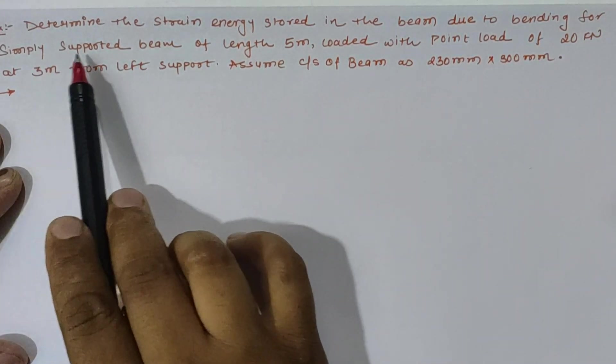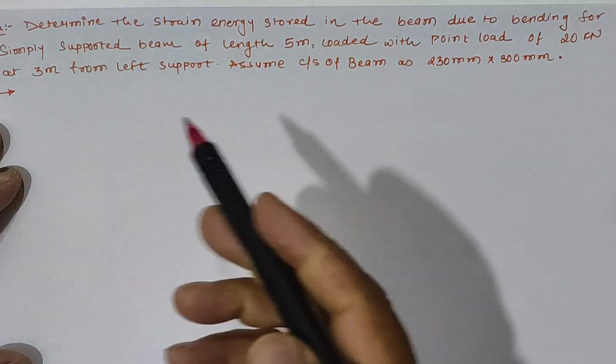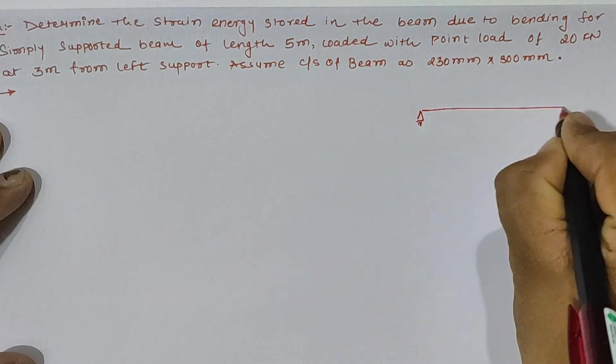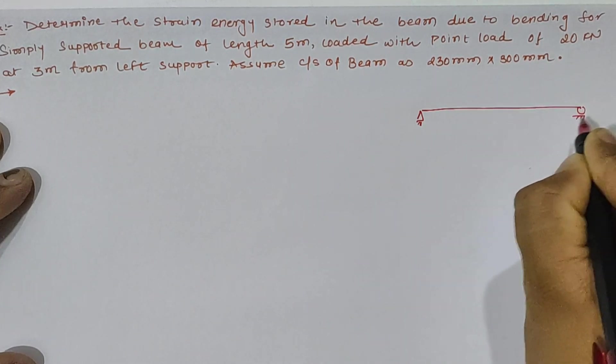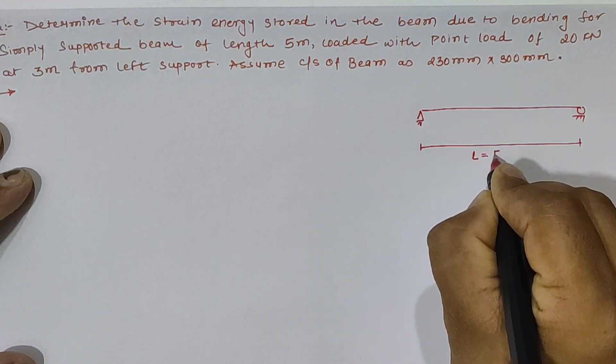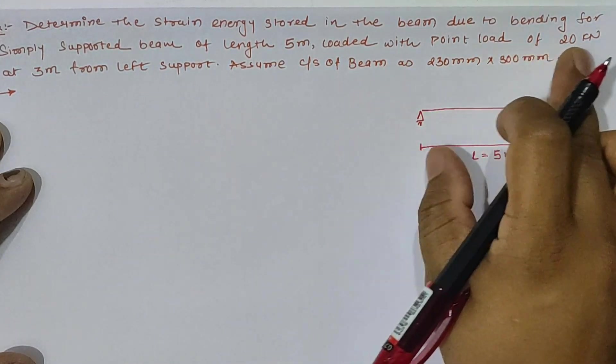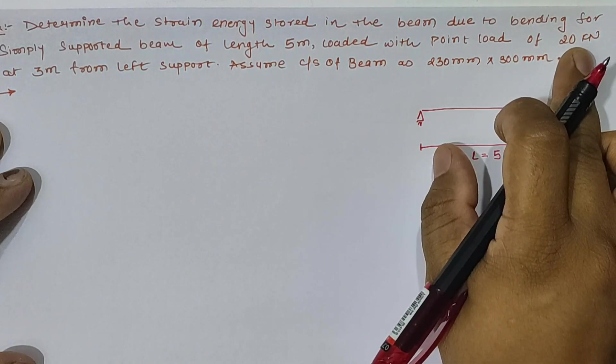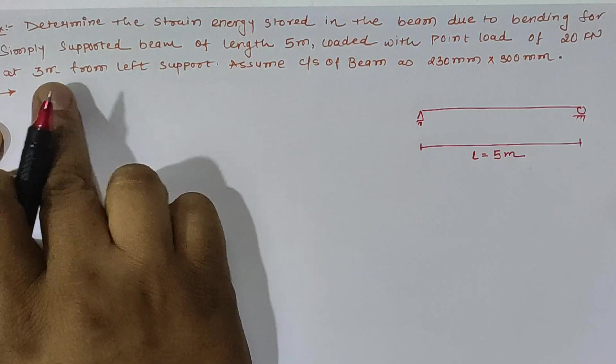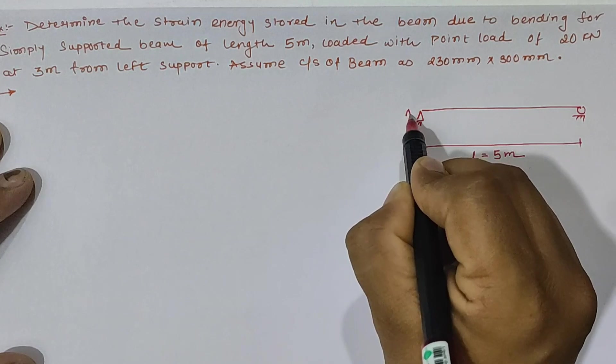We have given the simply supported beam of length 5 meters. It means we have given the simply supported span having overall length as 5 meter loaded with point load of 20 kN. It means we have given the point load as 20 kN at 3 meters from the left support.